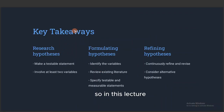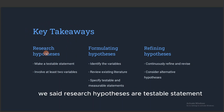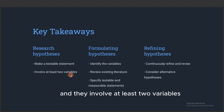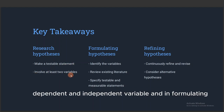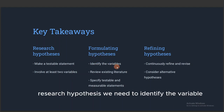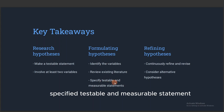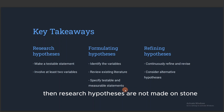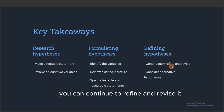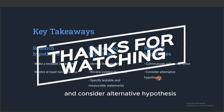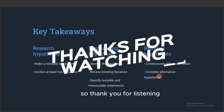In summary, the key takeaways from this lecture are: research hypotheses are testable statements involving at least two variables — the dependent and the independent variable. In formulating research hypotheses, you need to identify the variables, review existing literature, and specify a testable and measurable statement. Research hypotheses are not set in stone — you can continue to refine, revise, and consider alternative hypotheses. Thank you for listening.